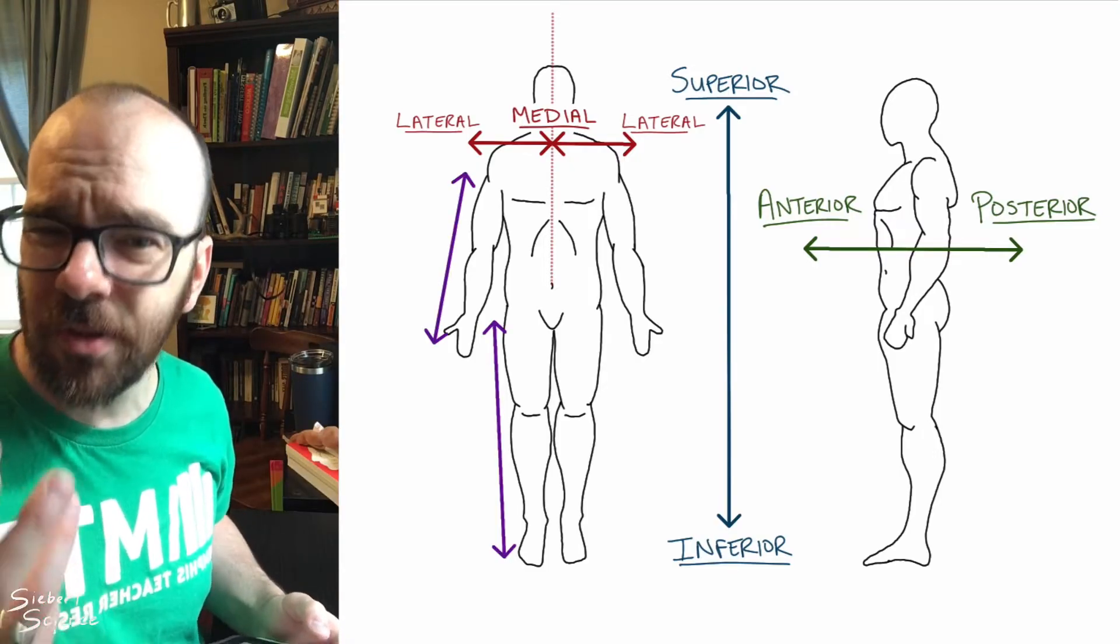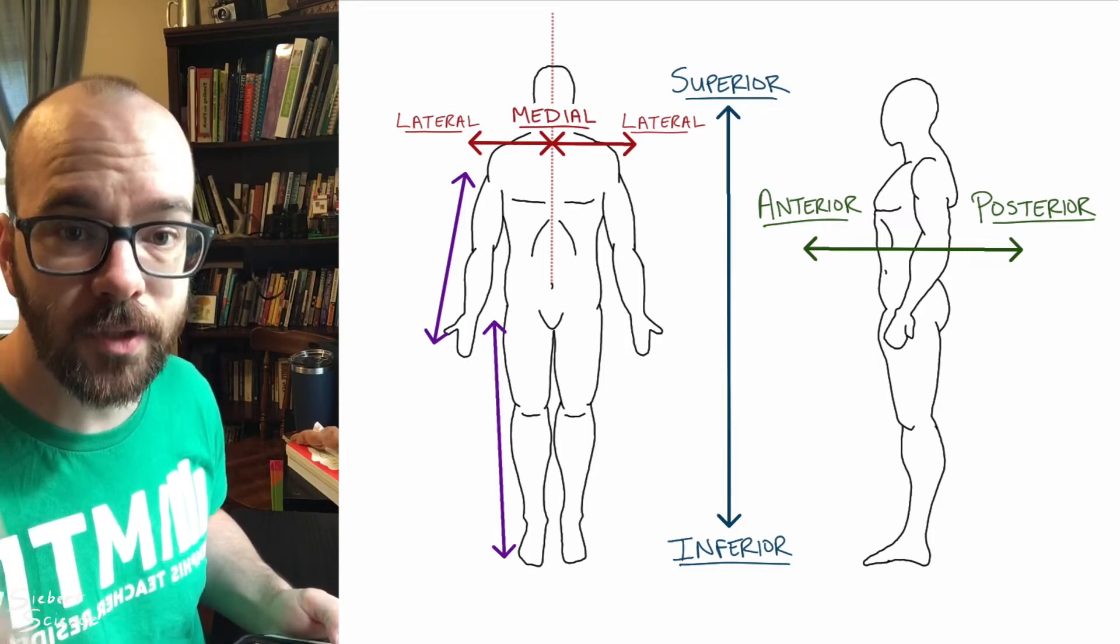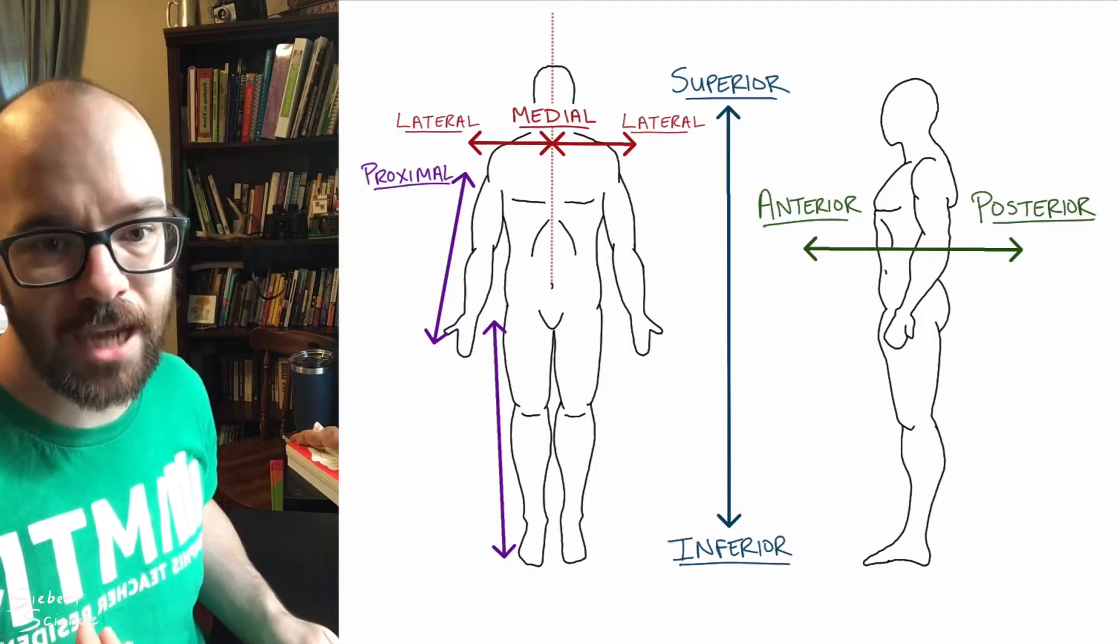Up next, we have two of the most confusing ones. I find that students have a hard time with these two, and these two are proximal and distal. I'm trying to make it as simple as possible. So proximal means toward the point of attachment.